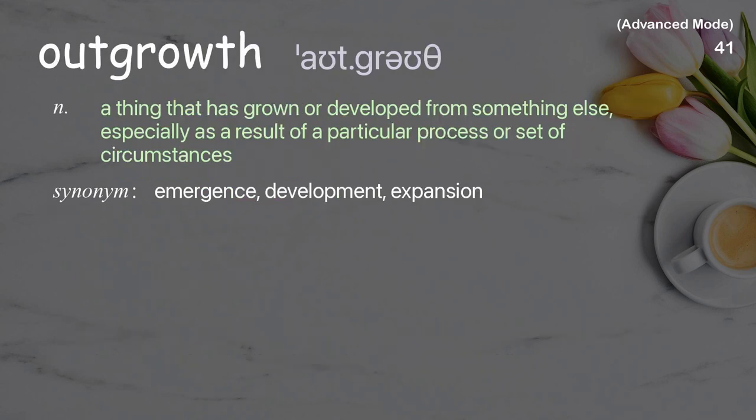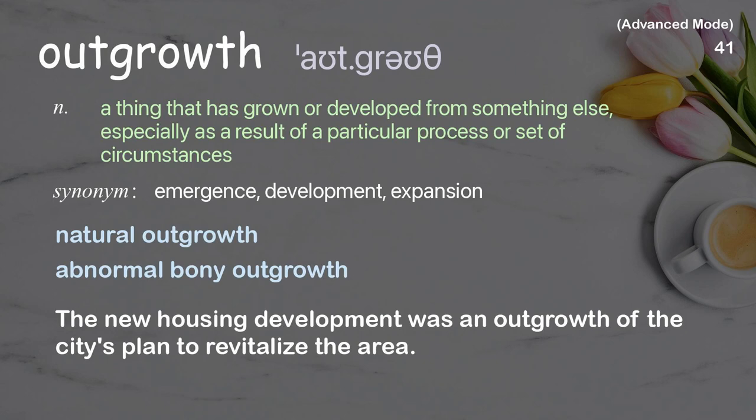Outgrowth: A thing that has grown or developed from something else, especially as a result of a particular process or set of circumstances. Examples: natural outgrowth, abnormal bony outgrowth. The new housing development was an outgrowth of the city's plan to revitalize the area.